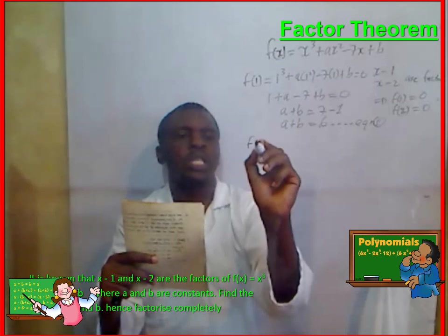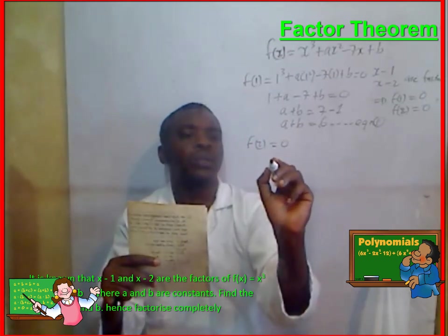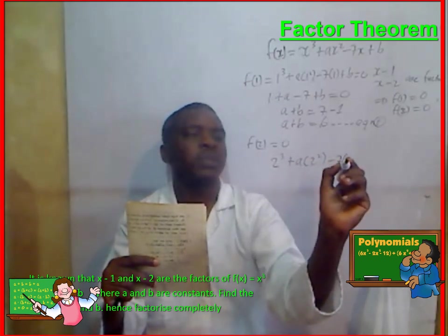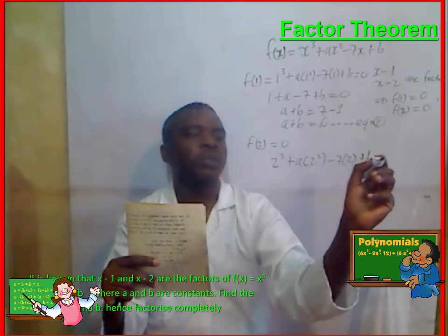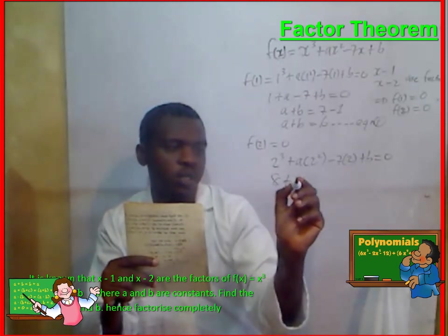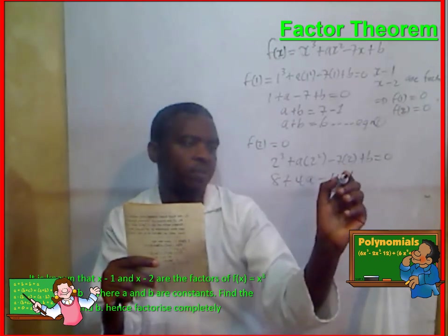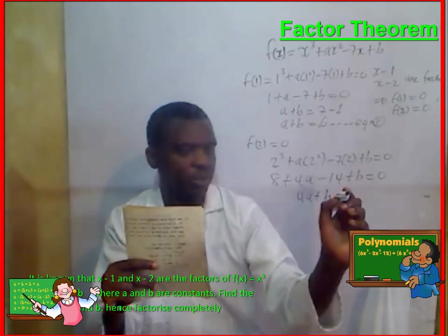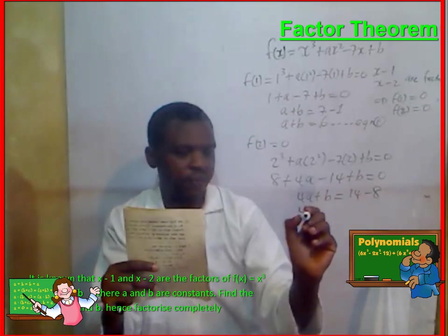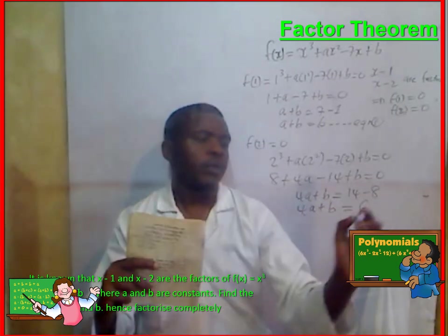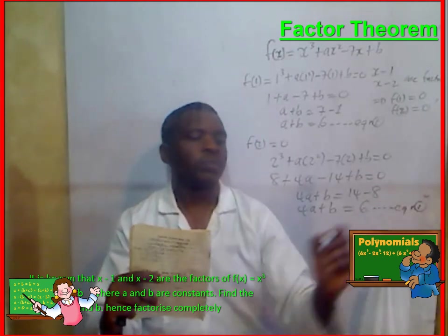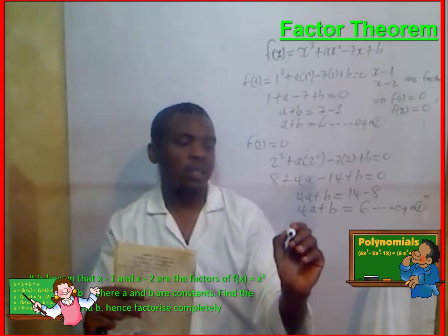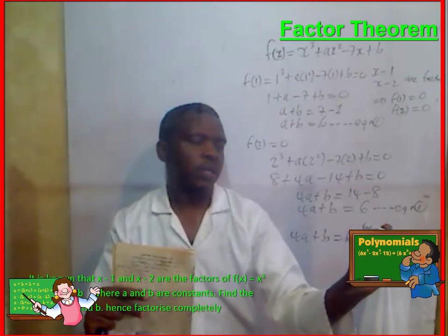Also, f of 2 is equal to 0. So, 2 cubed plus A times 2 squared minus 7 times 2 plus b is equal to 0. This gives us 8 plus 4A minus 14 plus b is equal to 0, so 4A plus b is equal to 6. We call this equation 2.